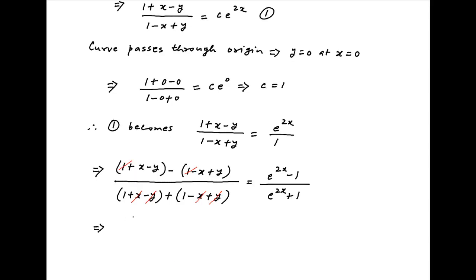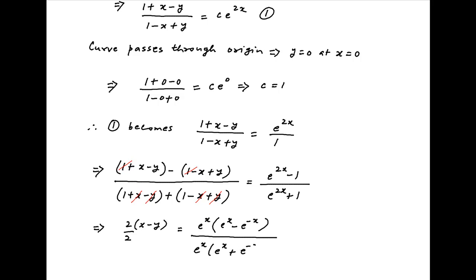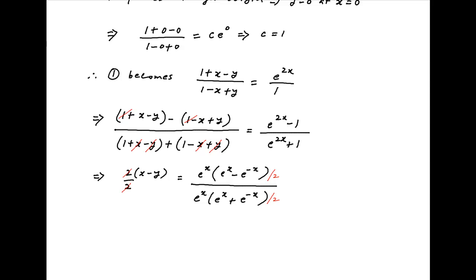This simplifies to 2(x minus y) upon 2 is equal to, on the right-hand side, e raised to the power x times (e raised to the power x minus e raised to the power minus x) divided by (e raised to the power x plus e raised to the power minus x). Dividing numerator and denominator by 2, the 2 cancels on the left-hand side and e raised to the power x cancels on the right-hand side, and the solution simplifies to x minus y is equal to sinh(x) divided by cosh(x), which is the required solution.